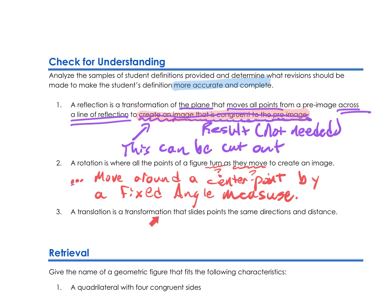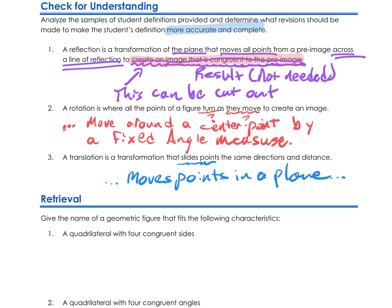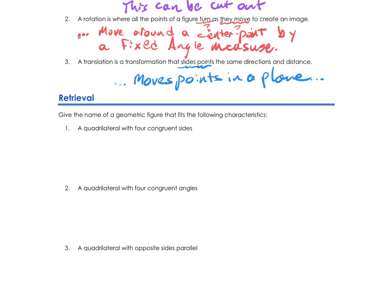Here's a student translation definition: 'A translation is a transformation that slides points the same directions and distance.' That's pretty good, but the word 'slides' is a little vague. We might be better off saying it moves points in a plane the same direction and distance.